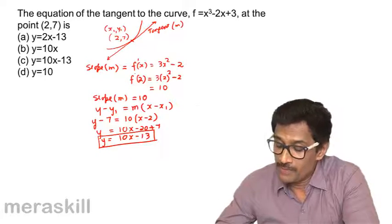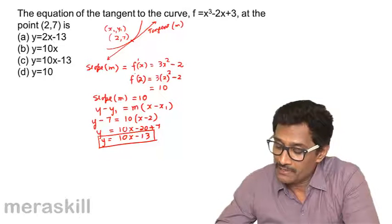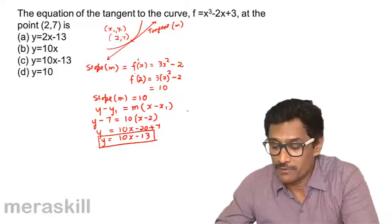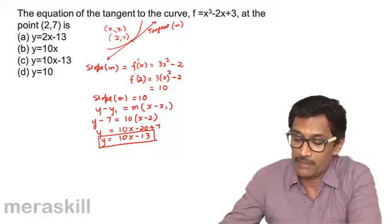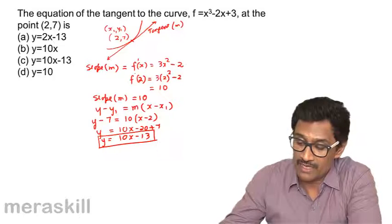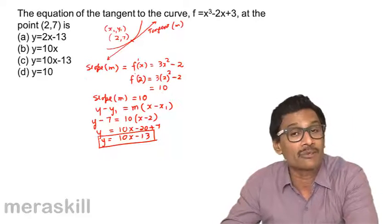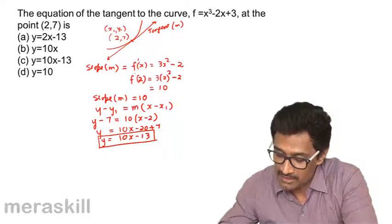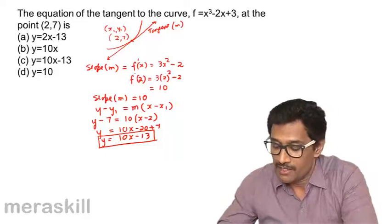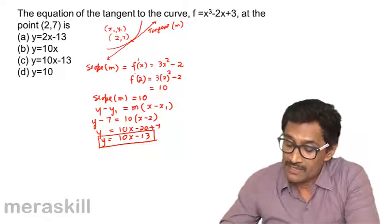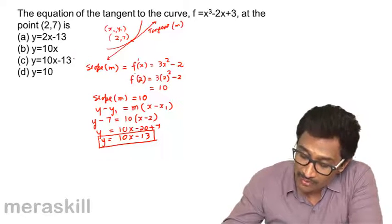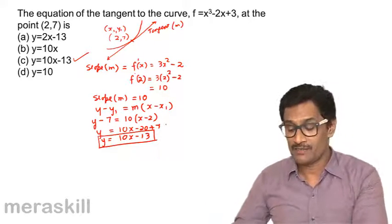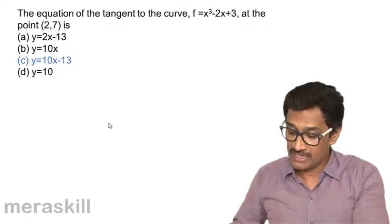Now that we know the slope of the tangent, the answer is y = 10x - 13. The value -13 is going to be the y-intercept. If you take the line, it will intersect the y-axis at (0, -13).